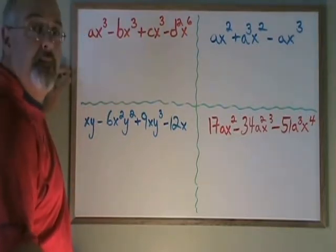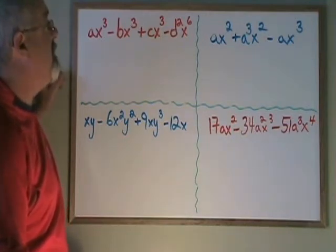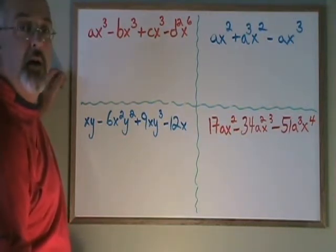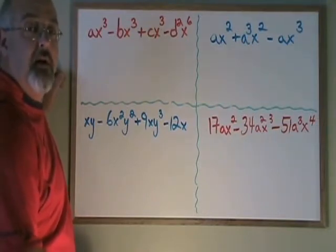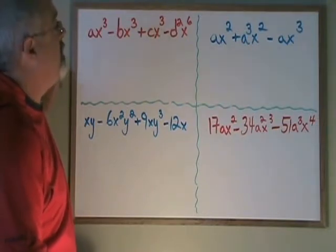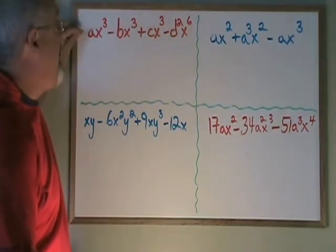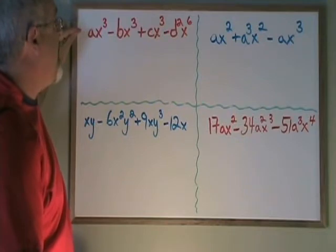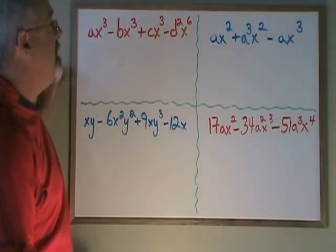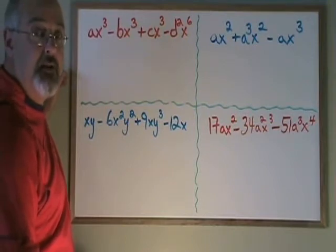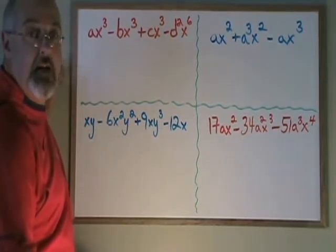Let's look at this example. I have ax cubed minus bx cubed plus cx cubed minus d squared x to the sixth, and I want to take out the greatest common factor of these four terms. The greatest common factor will not include an a, because while the first term has an a, the other three terms don't. It will not include a b, a c, or a d for the same reason.